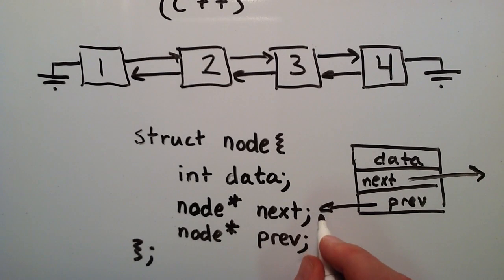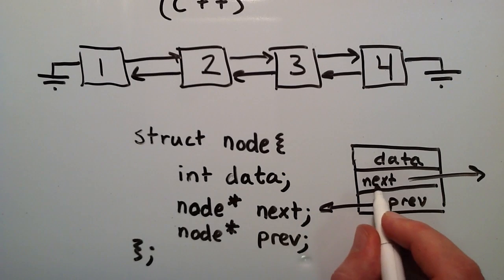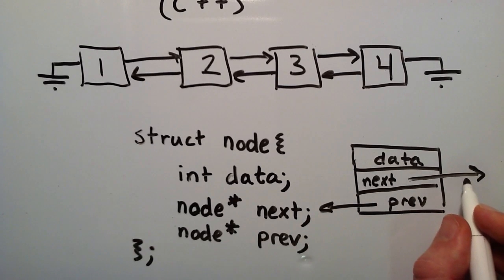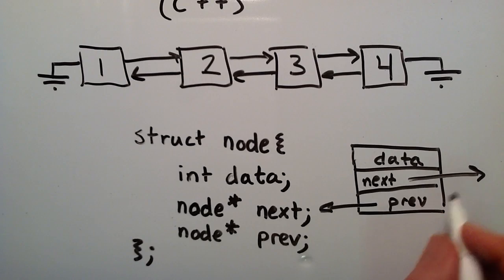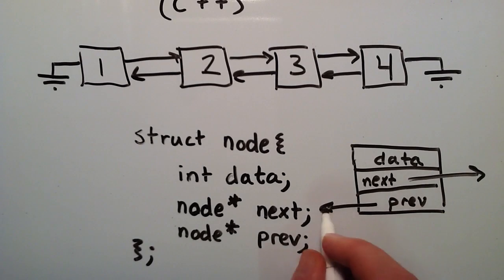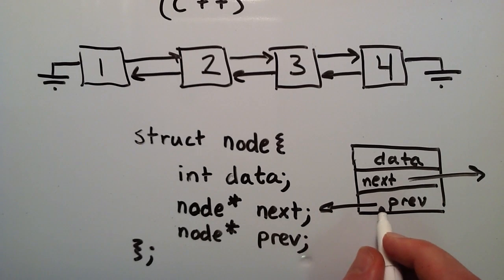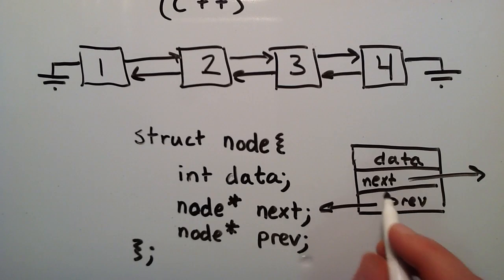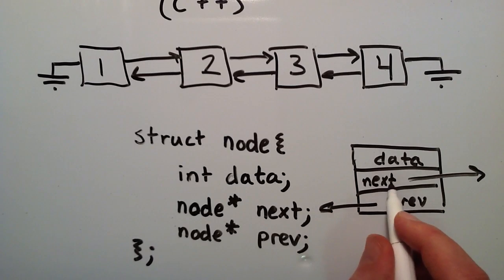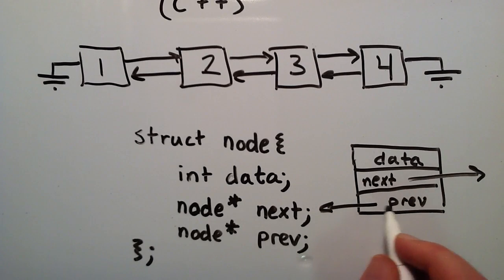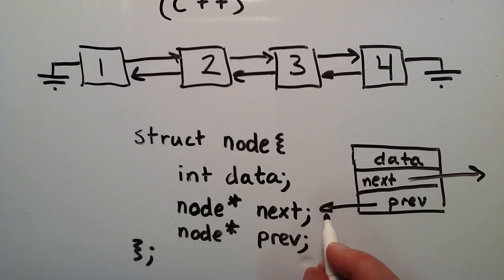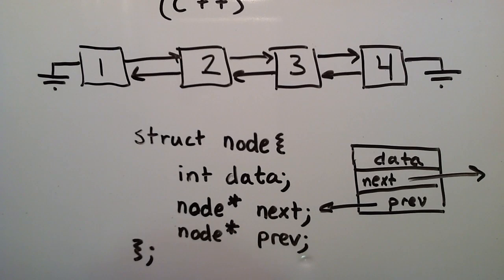Now as far as our program knows, the next pointer can really point to any node we tell it to, and the prev pointer can also point to any node we tell it to. So it's our job as a programmer to instruct our program to have this one point to the next one and this one point to the previous one. In a nutshell, that's basically the concept of a doubly linked list.